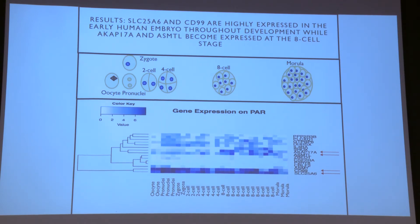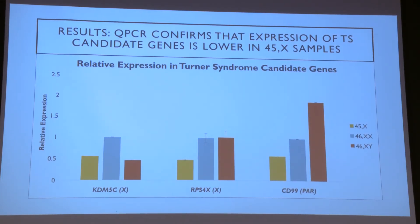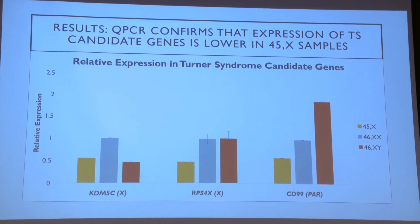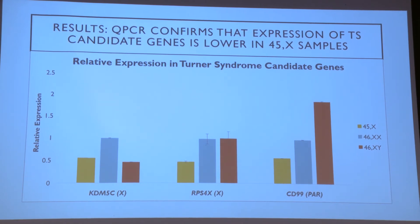Lastly, we have the PAR region genes SLC25A6 and CD99, expressed highly throughout embryonic development. But there's a different group — ACAP17A and ASMTL — that are highly expressed towards the end but don't become expressed until the eight-cell stage. My qPCR results show that the 45X samples do express genes less than the 46XX samples. We established with RNA-seq that there is gene expression of candidate genes in the normal population, and through qPCR we've established it's lesser in Turner Syndrome samples, which could contribute to the phenotype.